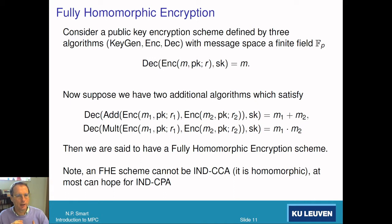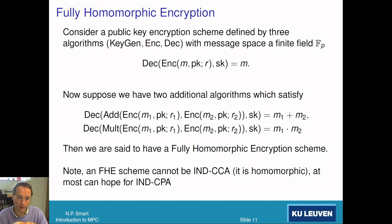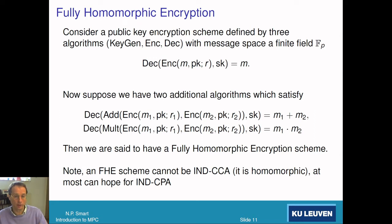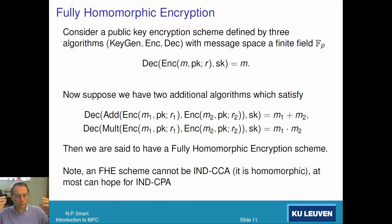What does it mean to be fully homomorphic? There are two other algorithms called addition and multiplication. The addition algorithm adds two ciphertexts together such that when you decrypt the result, you get the sum of the two original plaintexts. The multiplication operation takes two ciphertexts and multiplies them such that when you decrypt the result, you get the product of the underlying plaintexts. This is called a fully homomorphic encryption scheme because it supports both addition and multiplication.